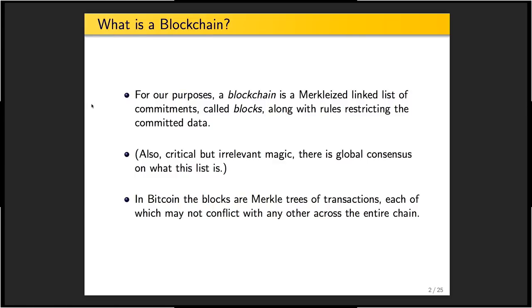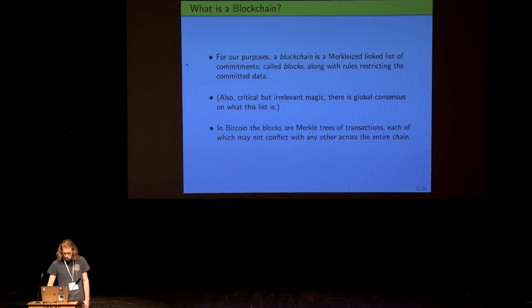Bitcoin is very simple. Every transaction contains a pile of inputs, a pile of outputs. The inputs are references to old outputs, and essentially the only rule beyond that the transactions are valid is that each input can only be used in one transaction. You can't double spend.